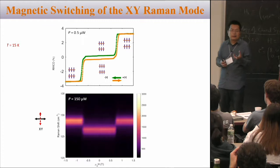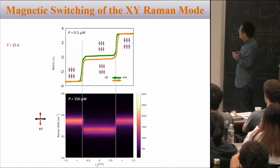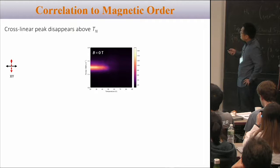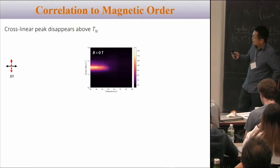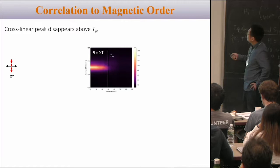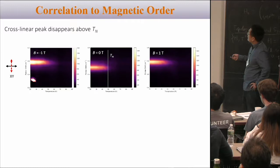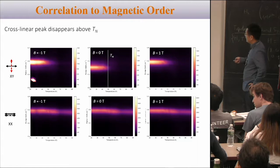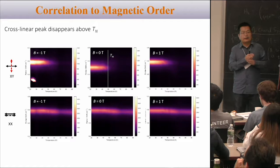The other thing is these modes actually shifted and overlap with the A1g modes in the XX channel. We can do more careful measurements: the top is the Kerr rotation measurement telling us what magnetic state we have, and the bottom is the Raman scattering in the XY channel as a function of magnetic field. There's a very sharp switch when the spin-flip transition happens. We can control the magnetic order to switch a Raman scattering mode — this only affects the XY channel, not the XX channel. The XY channel Raman scattering vanishes above the critical temperature and correlates with the magnetic order under applied field.